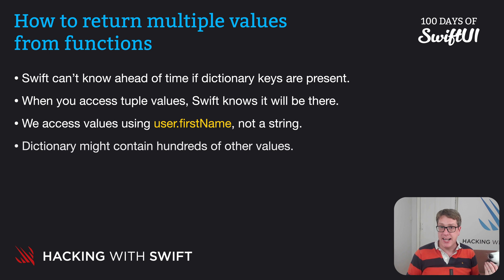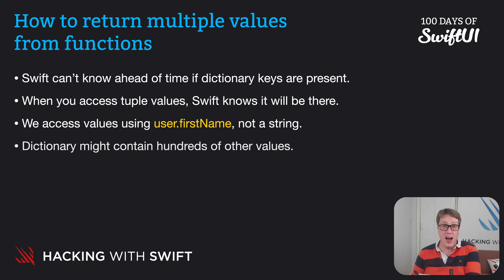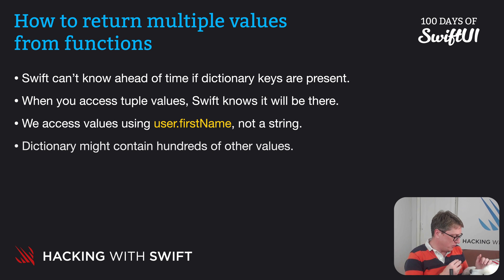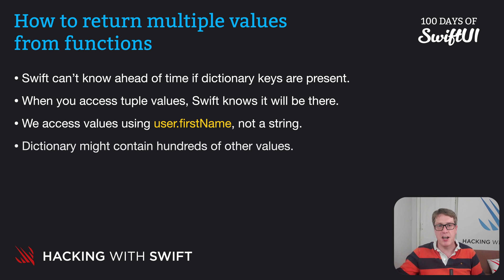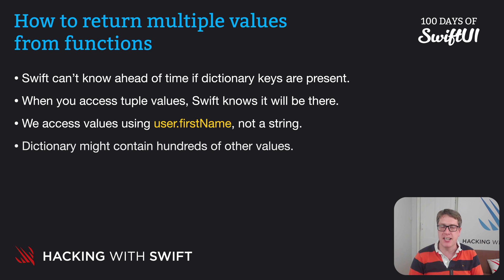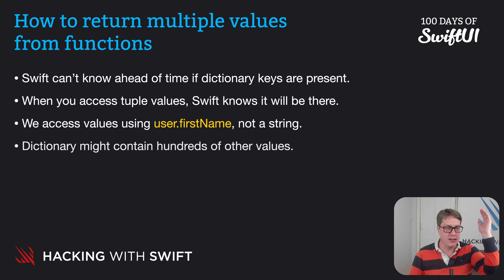Additionally, a dictionary might contain hundreds of other values — it's completely arbitrary how many values it contains. It could have the two we asked for and 500 other values; we just don't know. A tuple, by contrast, is an exact size. So tuples have a really big advantage over dictionaries because we specify exactly which values will exist and what types they have — firstName string, lastName string, age int — whereas dictionaries may or may not contain the values we're asking for.